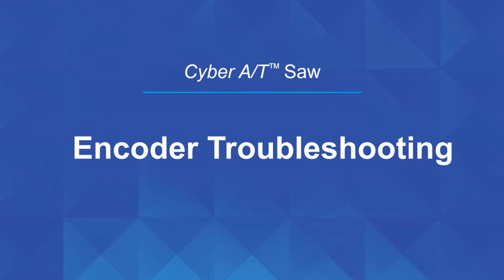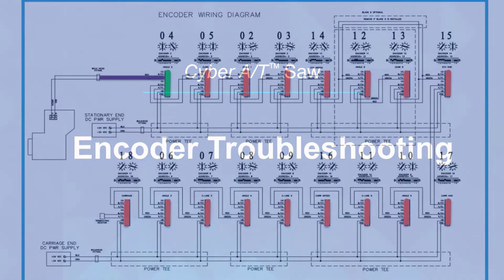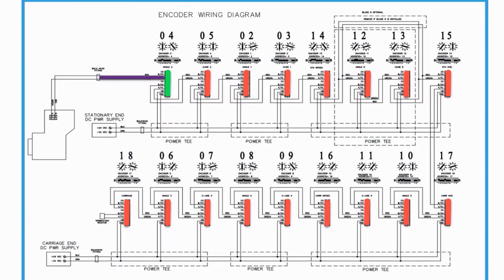Hope you enjoyed that. Let's talk about some encoder troubleshooting. On our encoder circuit, when we watched the video, what we saw was that we only had one green encoder showing on the screen and everything else was red. This is common — anytime we get a break anywhere in the circuit, it's going to make it look like all the encoders are having a problem. What it is is just a break in the circuit, and we have to determine how we can find that break.